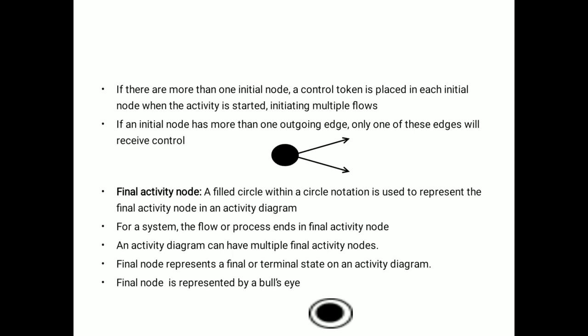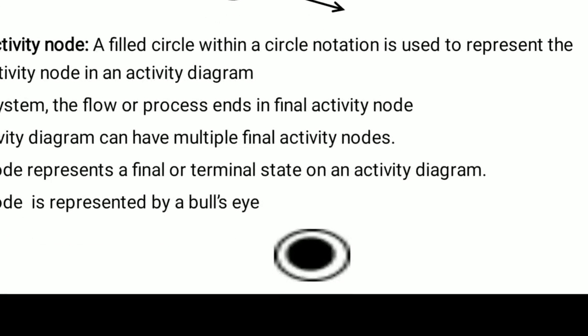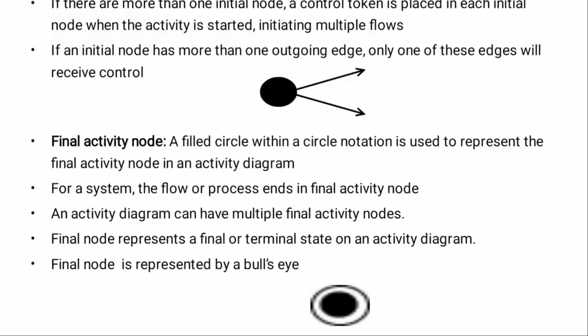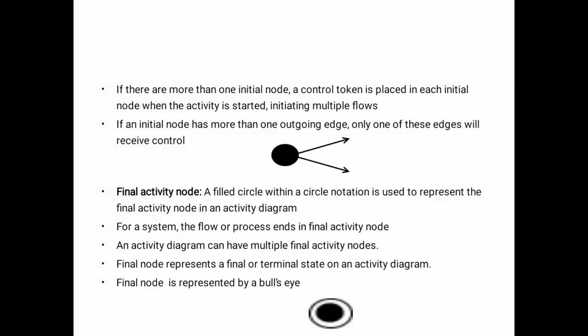Now, final activity node. This is your final activity. A filled circle within a circle notation is used to represent the final activity node in an activity diagram.